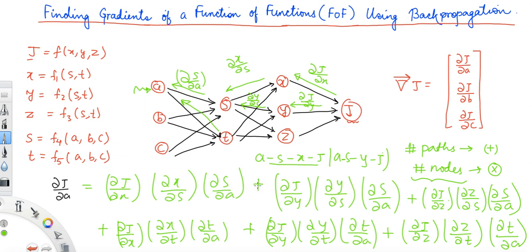So in all we have six terms, all added up. We add them because we have six paths and the change in A propagates through all six — that's why we add them up. This gives us the full ∂J/∂a. Similarly, we can find ∂J/∂b and ∂J/∂c in the same fashion. It would be great if you try it out yourself and comment below with the equations you get. Hope you understood — thank you very much.